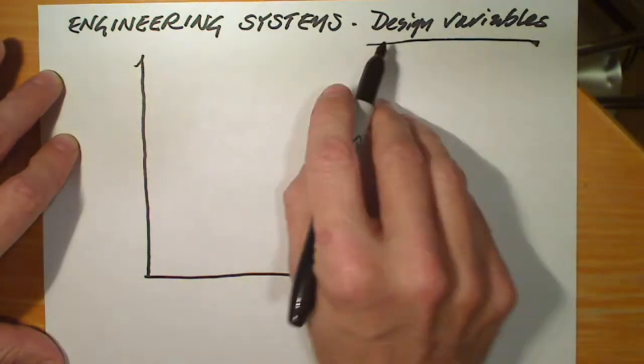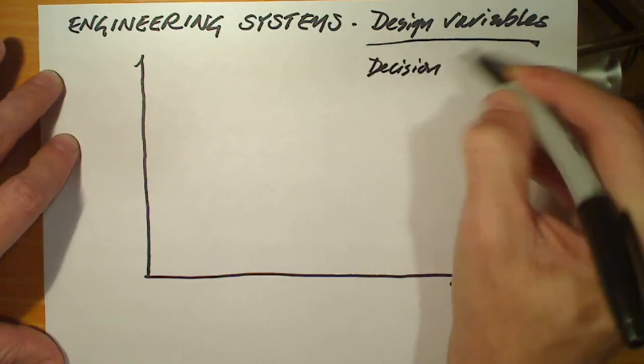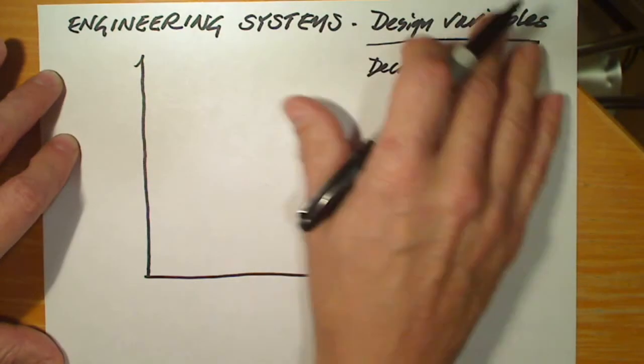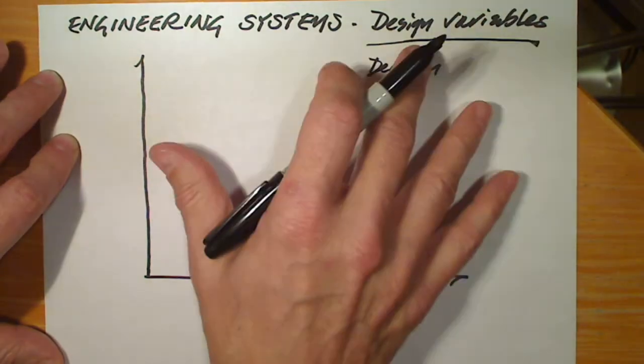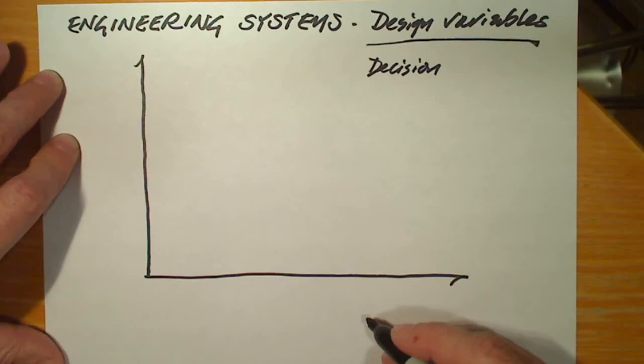One of the most important is this term design variable, also sometimes called decision variable. We need to know what the design variables are. And in the simplest terms, they're the things that the engineer has discretion over.